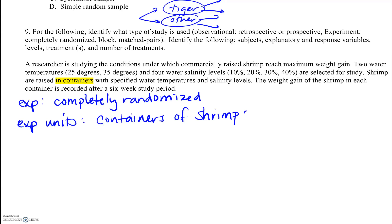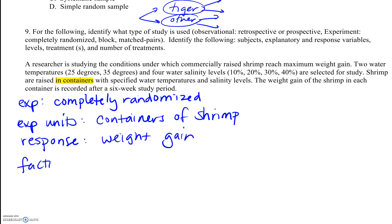The shrimp themselves are what we measure at the end, so they are technically our observational units. We're recording weight gain. For the response variable, we're measuring weight gain. For our explanatory variables — what we think influences that — it's water temperature and salinity levels.